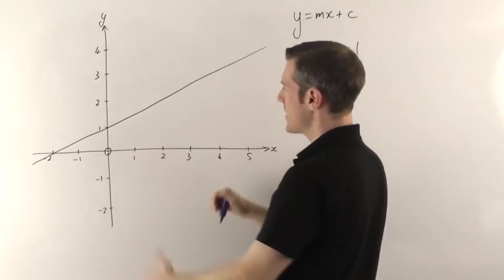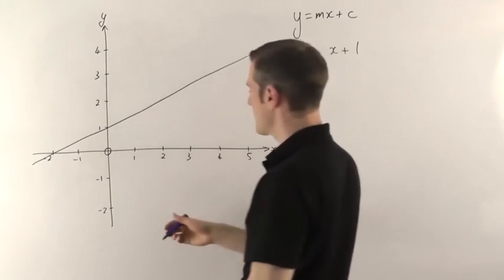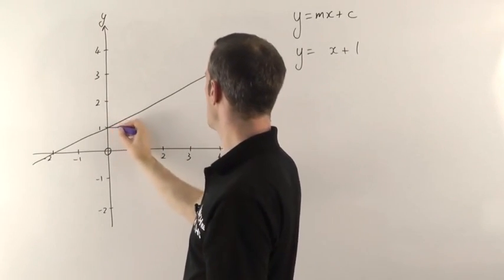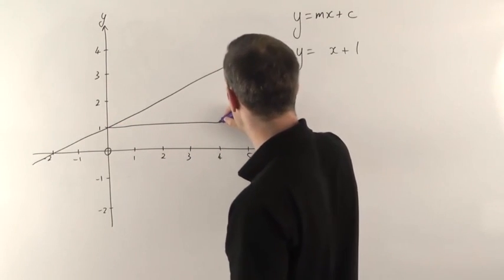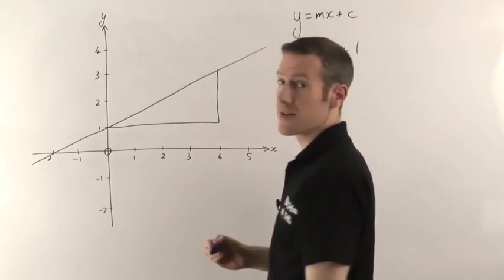So I'm going to go across to 4 and then I'll go back up to the line and we'll see where that ends up. So we need to find the height and the width of the right angle triangle.